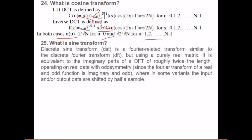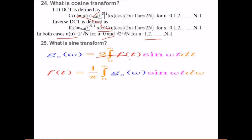What is sine transform? Discrete sine transform basically is a Fourier related transform similar to discrete Fourier transform, but usually using purely real matrix. It is equivalent to the imaginary parts of DFT or roughly twice the length operating on a real data with odd symmetry. Since the Fourier transform of a real and odd function is imaginary and odd. Some variants input and output data are shifted by half a sample. This is the formula. You apply this with sine and this is inverse.